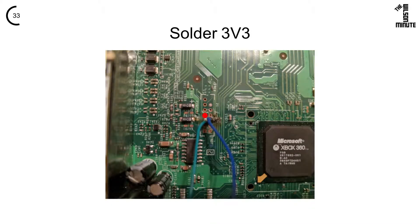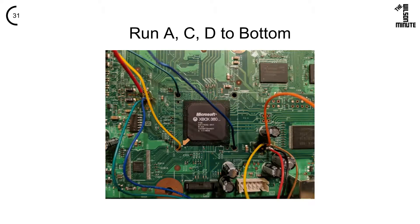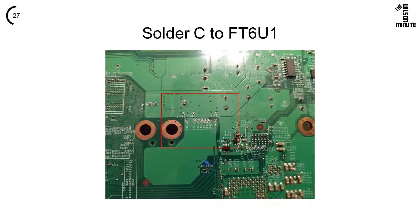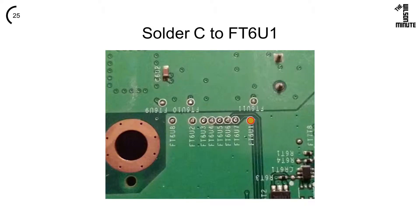Find this via and solder 3v3 here. Run A, C, and D to the bottom through these holes. Leave the top right hole empty. Zooming in you will see these points. Solder C to FT6U1.